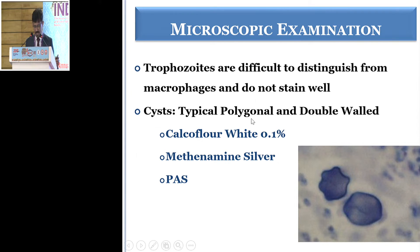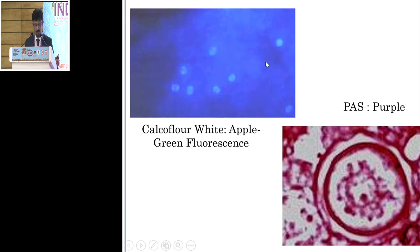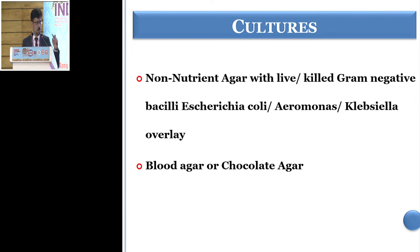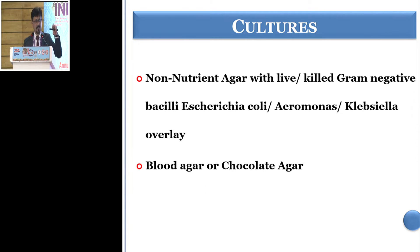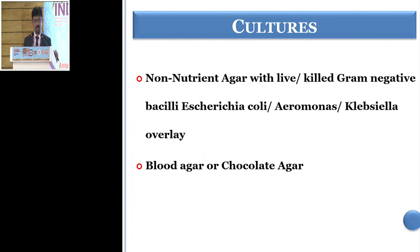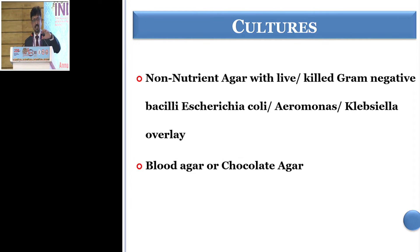The cysts stain well with calcofluor white, and the apple-green fluorescence is seen with calcofluor. On culture, it is done on non-nutrient agar with live or killed gram-negative bacilli. In a single plate, if you put the scraping, you will see depressions called trails. However, these depressions can also be seen with simple macrophages. It is always advisable, once you see depressions and trails, to do a serial transfer — because macrophages degenerate after that but acanthamoeba does not, so on serial transfer you will again have trails in the next plate, confirming acanthamoeba.